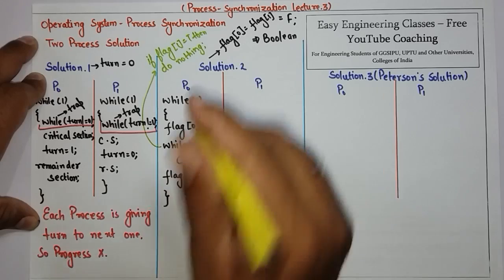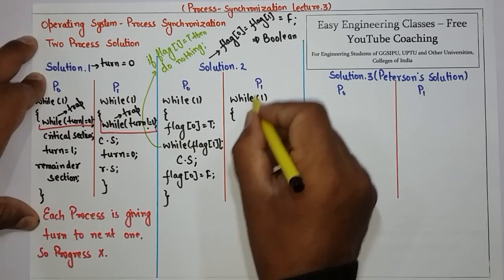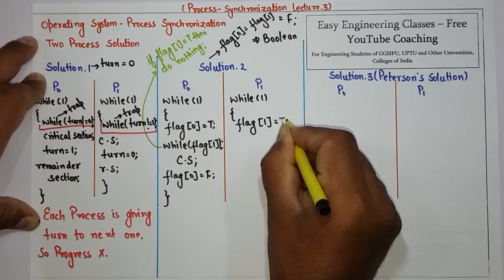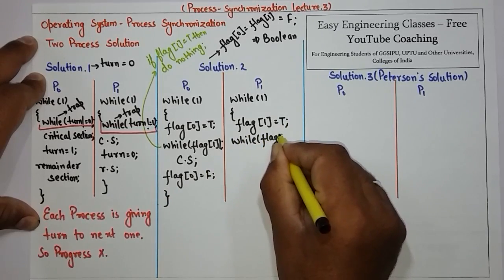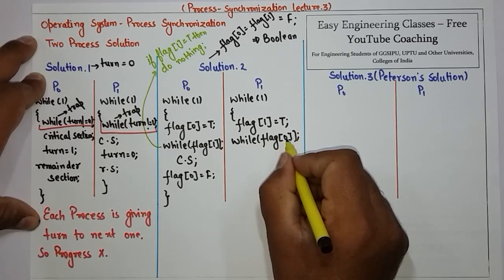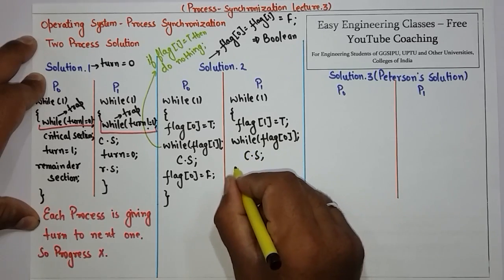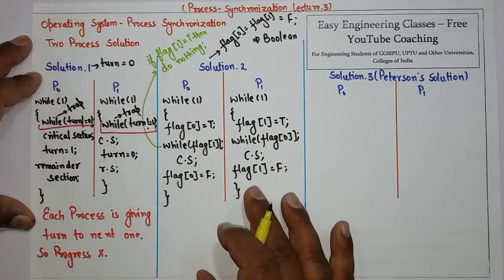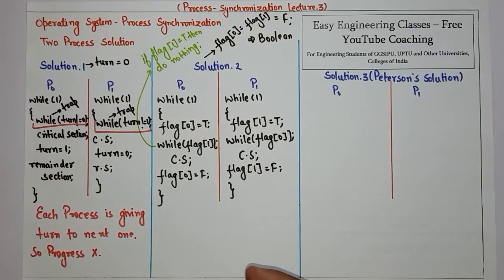When P1 wants to enter the critical section, it sets flag[1] equal to true and checks while flag[0]. If flag[0] is also true, P1 does nothing. But since flag[0] is false at that point, P1 is allowed to enter. In the exit section, flag[1] is set back to false. Progress is achieved in this solution because no process is forced to enter the critical section.